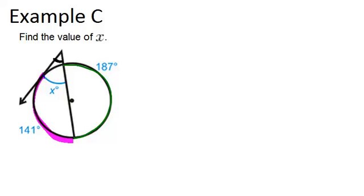which is the big arc, this pink one, minus the smaller arc right here, divided by 2, will give us the angle we're looking for, x. Now the problem is we don't know what this green arc is yet, so we're going to have to figure that out